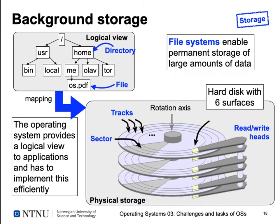In addition to main memory, we have background storage, which provides another abstraction. Our computer provides raw storage hardware — for example, a hard disk with six surfaces. A hard disk consists of platters made of aluminum or glass coated with magnetic material. This is read and written by read-write heads — one on top and one on the bottom of each disk. You have three disks giving six surfaces overall. These surfaces are split into tracks (accessed by moving the arms in and out), and the tracks are split into sectors.